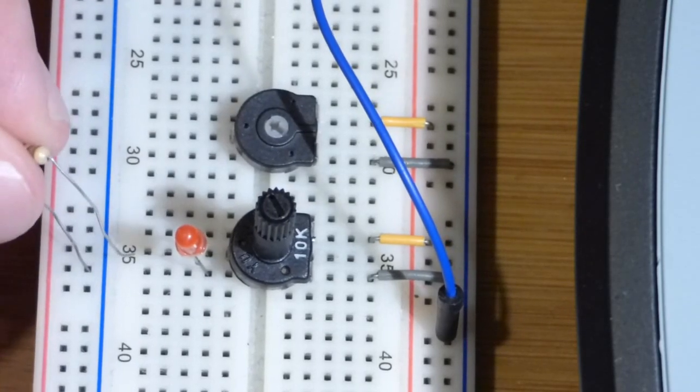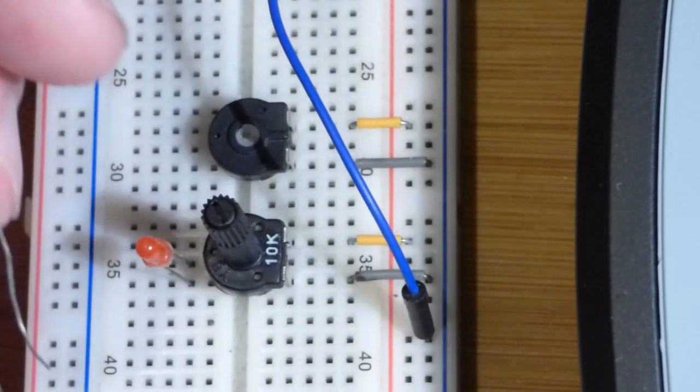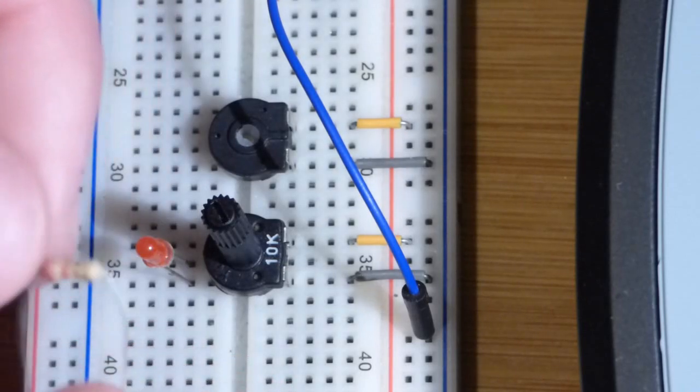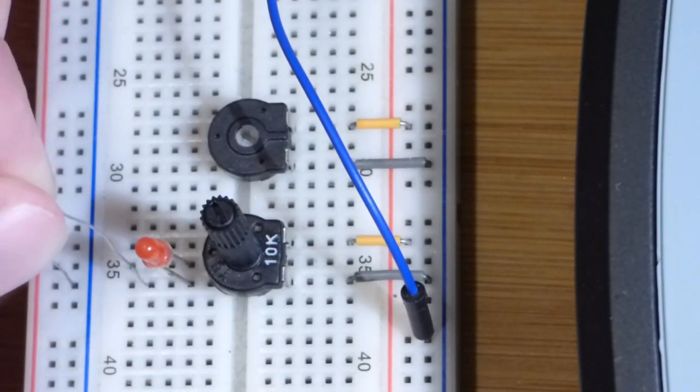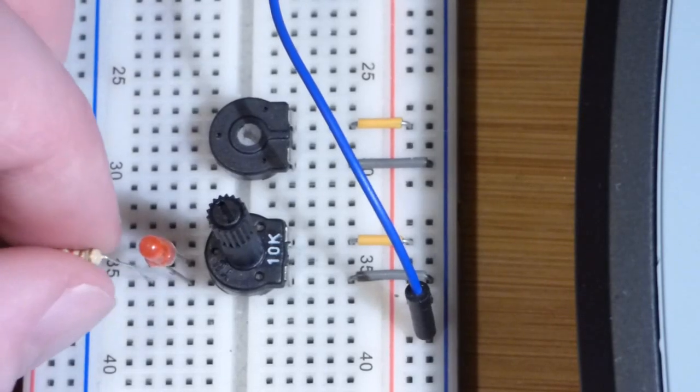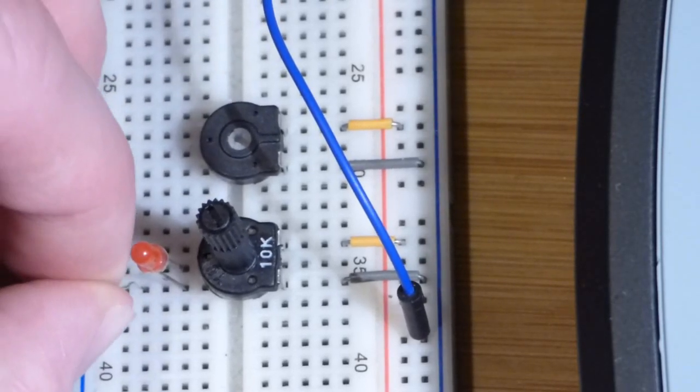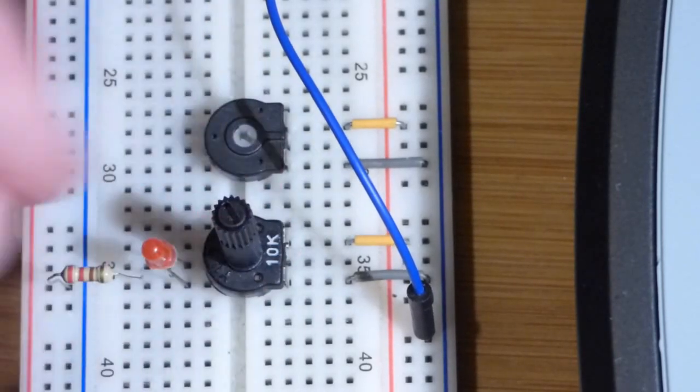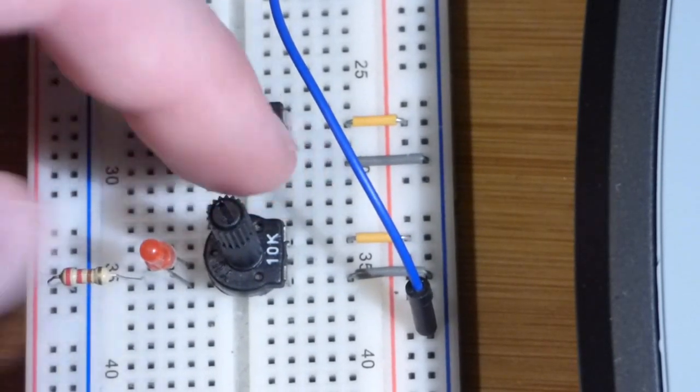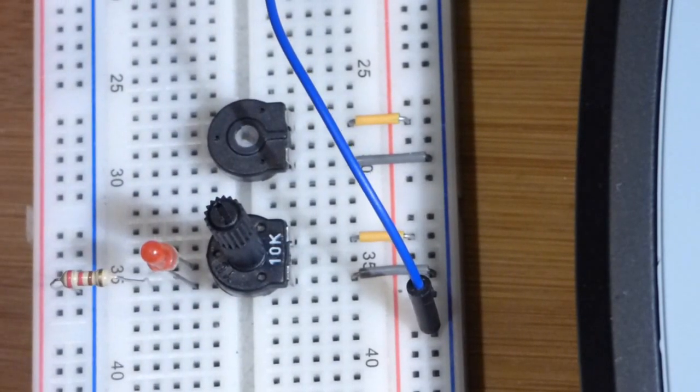We're going to take a 220 ohm resistor because that will limit current enough to protect the LED - less than 20 milliamps, that's generally what's recommended. It will keep this resistor at less than an eighth of a watt. It's rated for a quarter watt - you generally want to keep it about half. And it will also limit current through this potentiometer when I set it all the way up to the positive, so it will protect all three components.